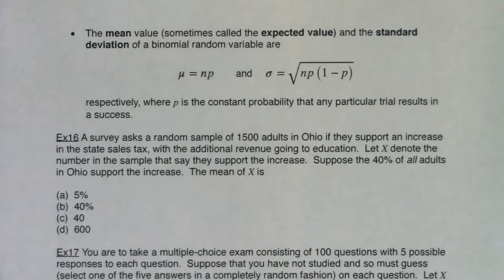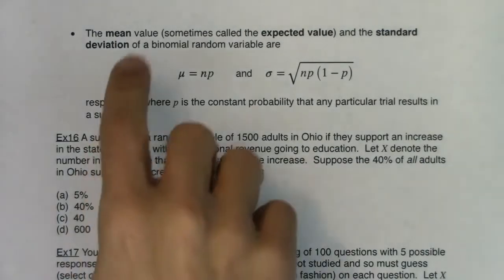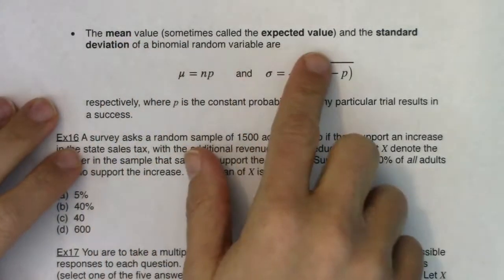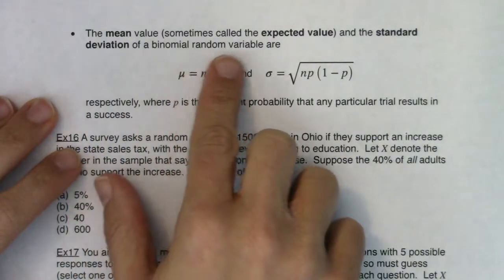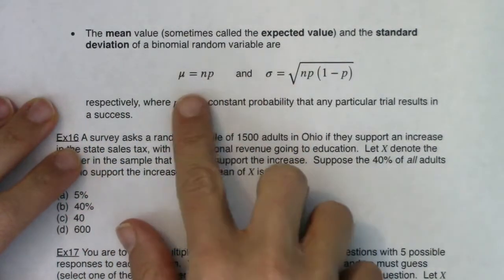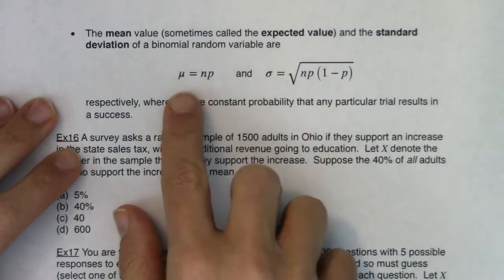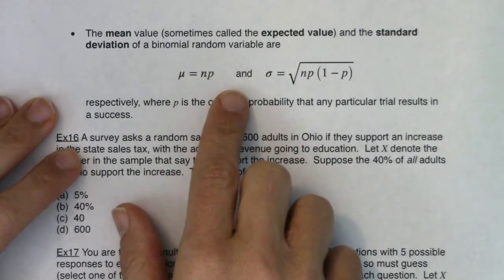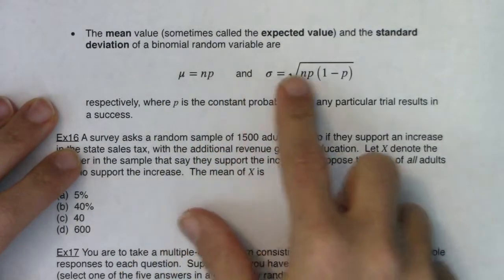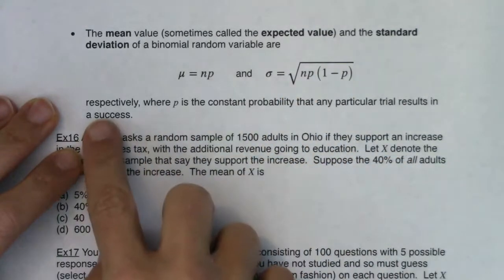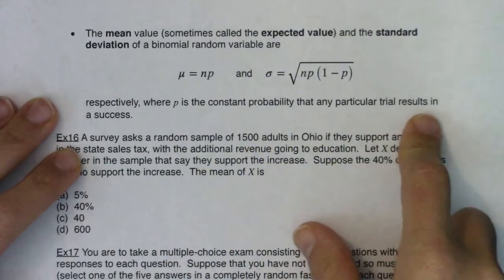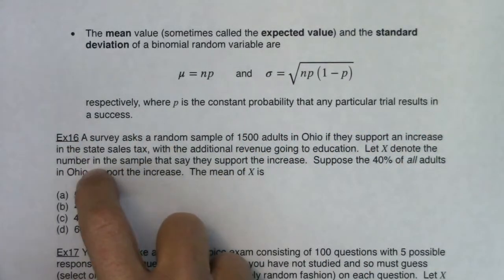Now we're going to pick up the mean and standard deviation formulas for a binomial random variable. The mean value, sometimes called the expected value, and the standard deviation of a binomial random variable are these two formulas respectively. The mean will be n times p, and the standard deviation will be the square root of np times 1 minus p, where p is the constant probability that any particular trial results in a success.